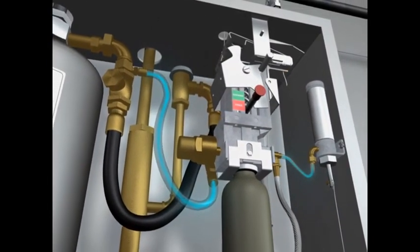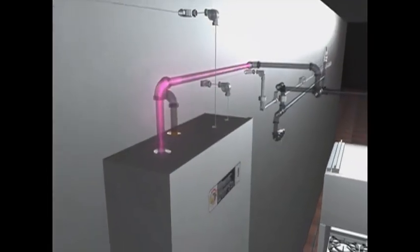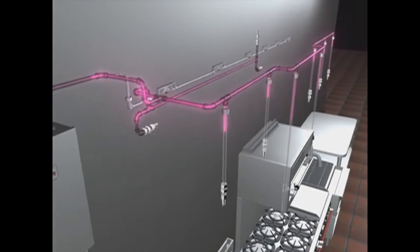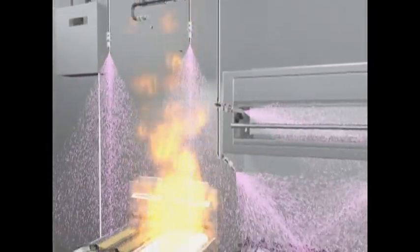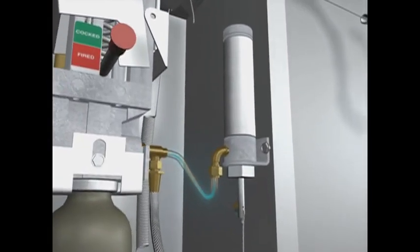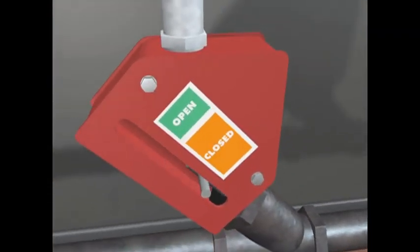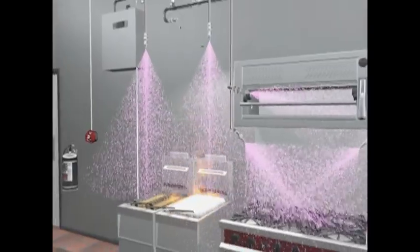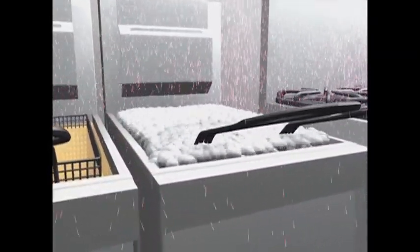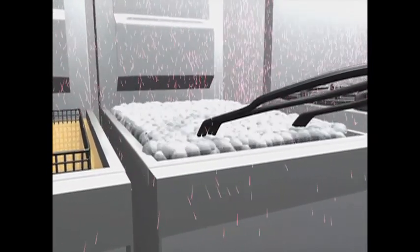The compressed gas pressurizes the PRX agent tank and discharges Ansel PRX wet chemical agent throughout the system, rapidly knocking down the flames. Simultaneously, an air cylinder is pressurized, tripping the Ansel mechanical gas shutoff valve. The discharged chemical reacts with the hot grease to form a vapor-securing blanket to help prevent fire reflashes.